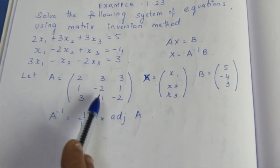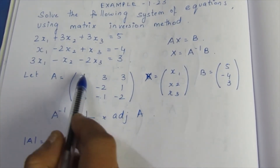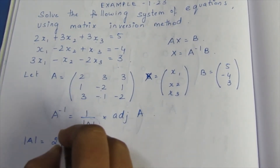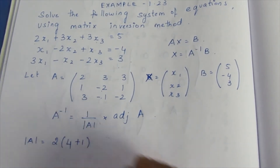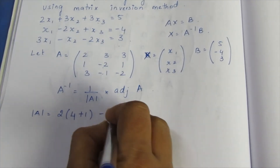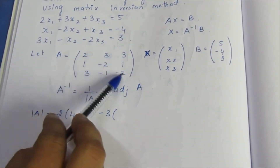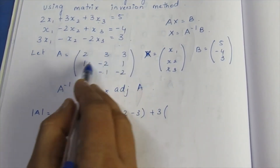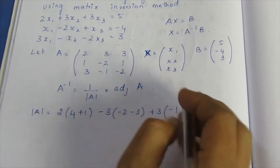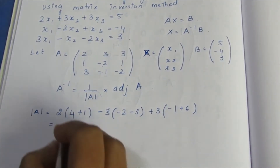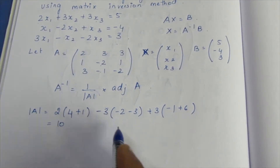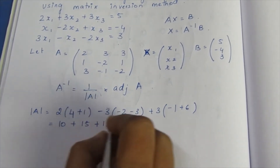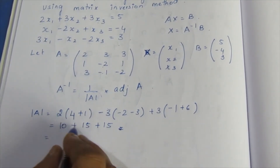Now let's compute the determinant of A by expanding along row 1. We get: 2·((-2)·(-2) - (1)·(-1)) - 3·((1)·(-2) - (1)·(3)) + 3·((1)·(-1) - (-2)·(3)). This simplifies to 2·(5) minus 3·(-5) plus 3·(5), giving 10 + 15 + 15 = 40. So determinant of A = 14.